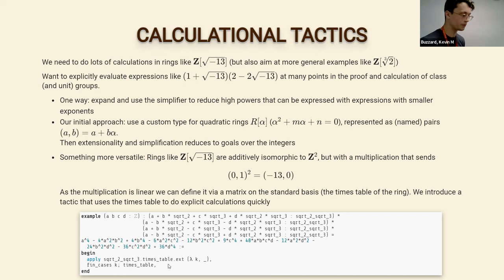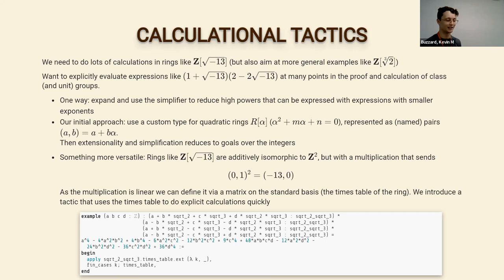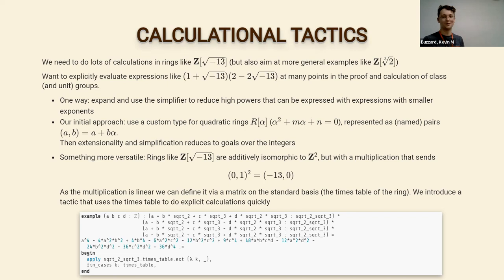We hope a future version of this will be useful when doing such proofs, because you have to do things like this all the time. If you want to check that some ideal is generated by a single element, you express the original generators in terms of that element multiplied by something else and check they really multiply together correctly — and you have to do this over and over every time you want to prove two ideal classes are equal.